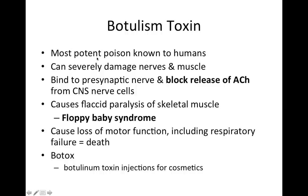The botulism toxin is the most potent poison known to humans. It can severely damage nerves and muscle. It binds to presynaptic nerves and blocks the release of acetylcholine from CNS nerve cells — that's the mode of action. This causes flaccid paralysis of skeletal muscle, which is the main symptom of floppy baby syndrome. It can cause loss of motor function including respiratory failure, which can lead to death. Botox injections actually contain botulinum toxin — so the most potent poison known to humans is what's used in cosmetic Botox injections.